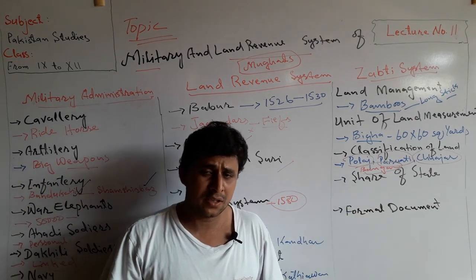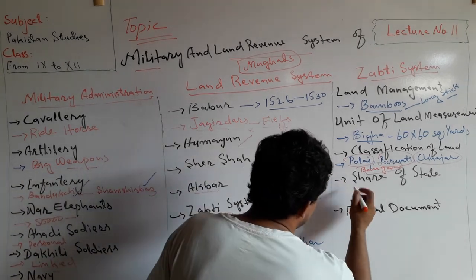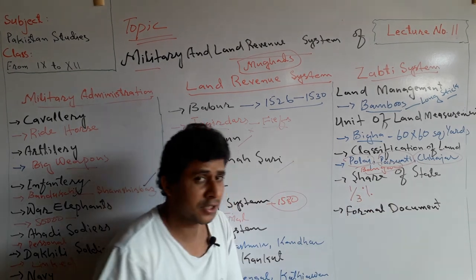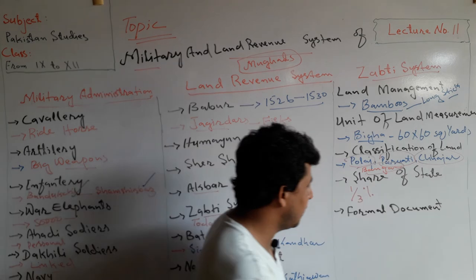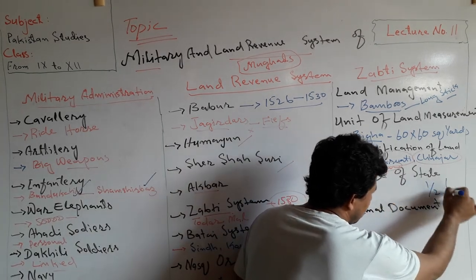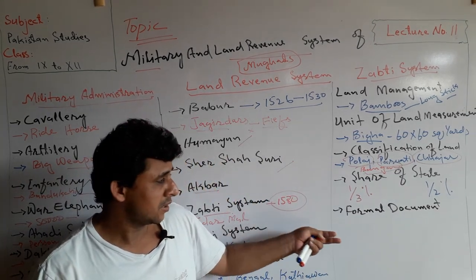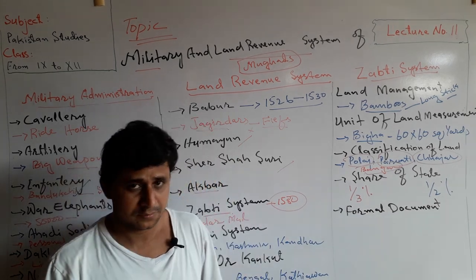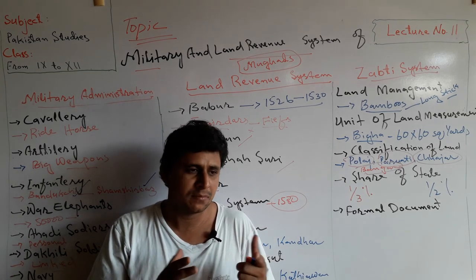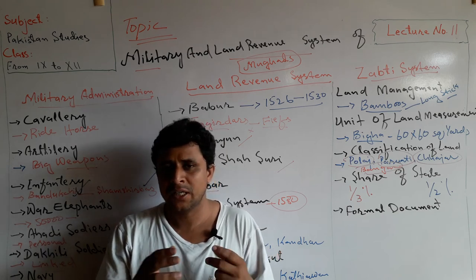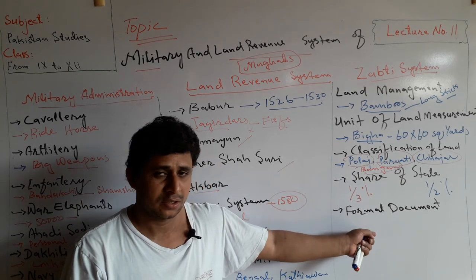The state's share was one-third of the production of land, except under Shah Jahan, who charged one-half from farmers and peasants. A formal document was also given to a farmer when the Mughal empire granted land to a person, serving as proof of possession.